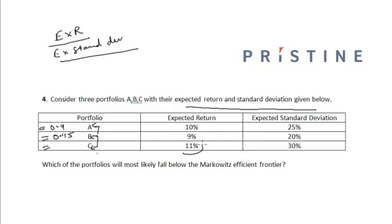For Portfolio C, it is 11% divided by 30%, which equals 0.37. So we can see that for Portfolio C, the ratio of expected return to expected standard deviation is the least.